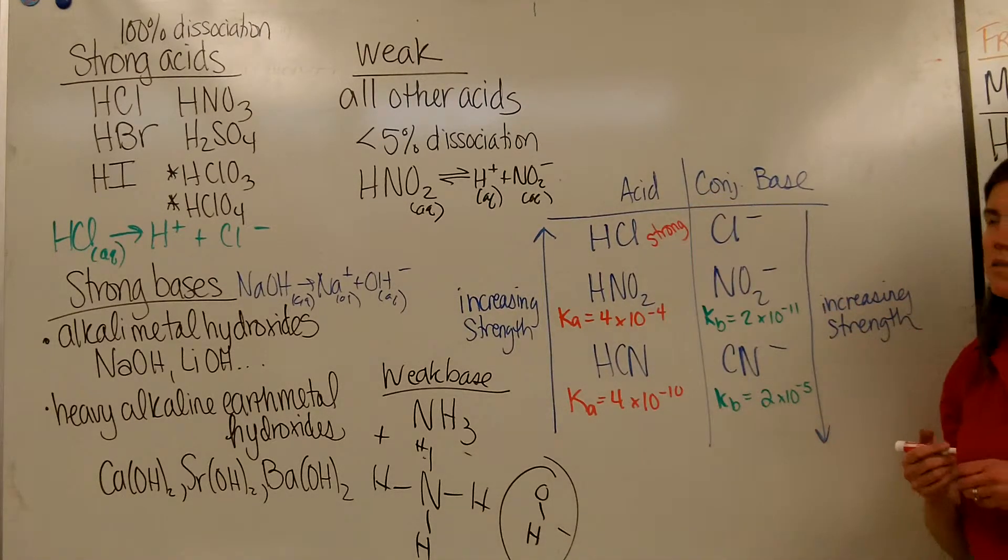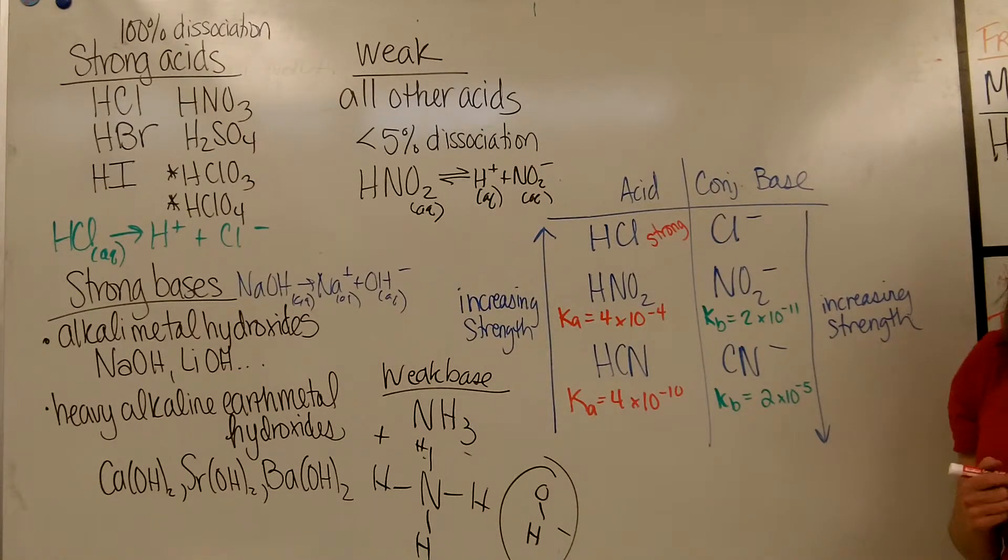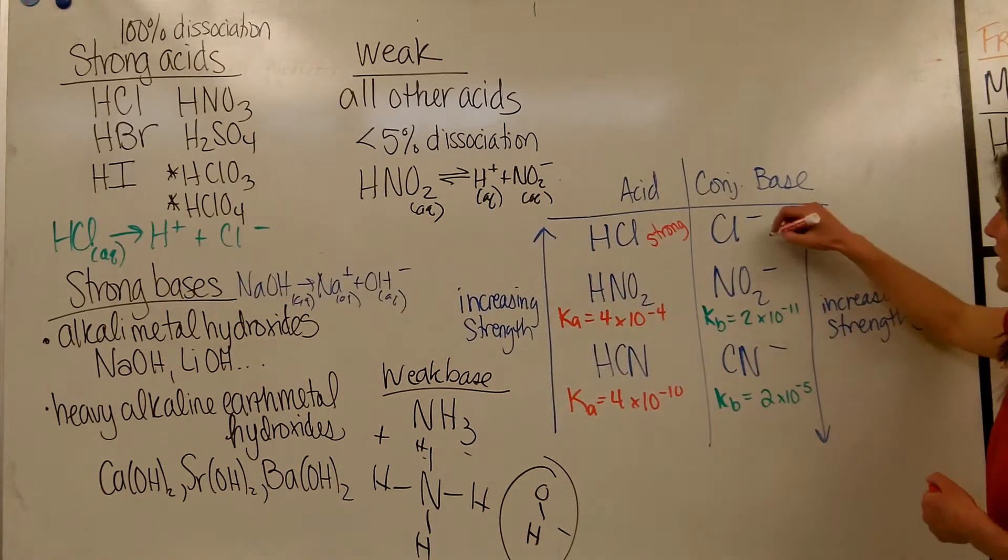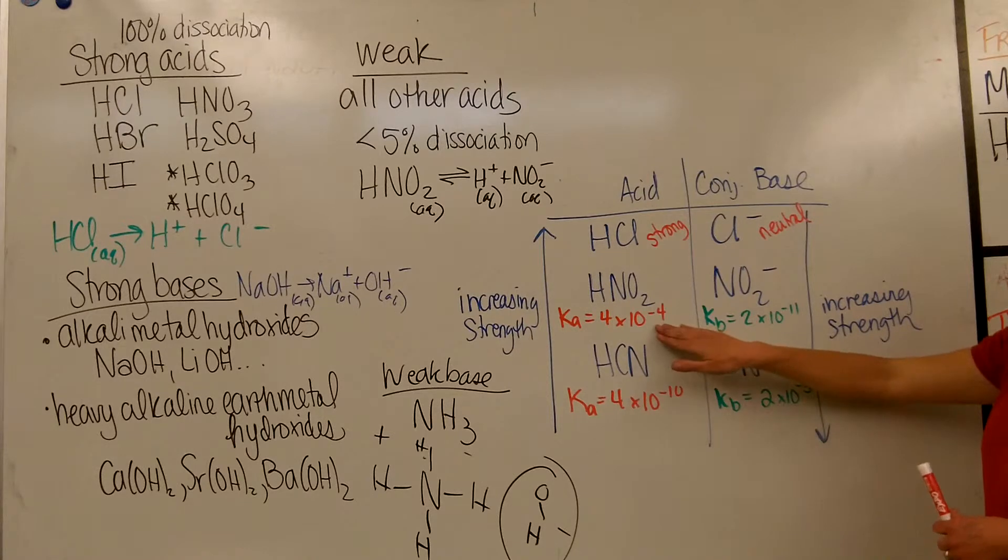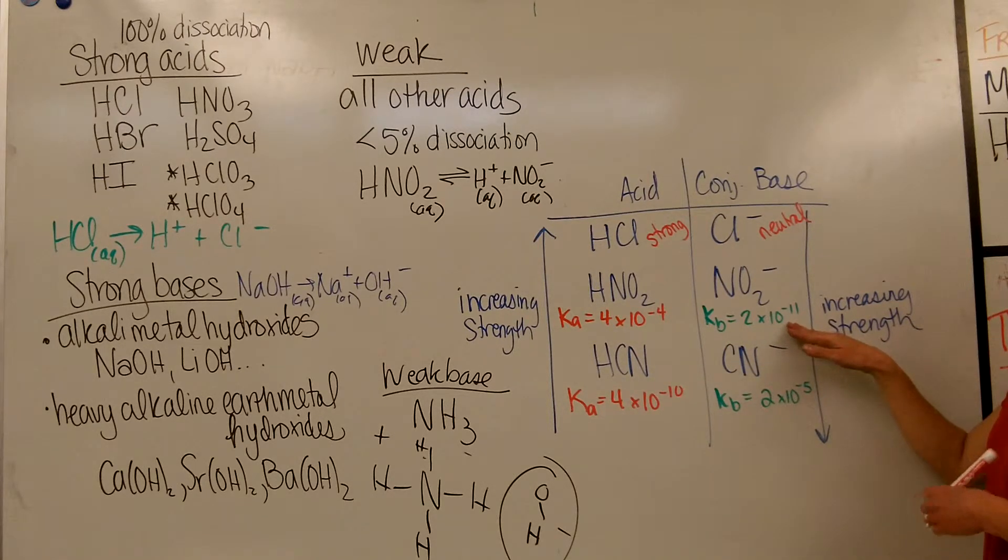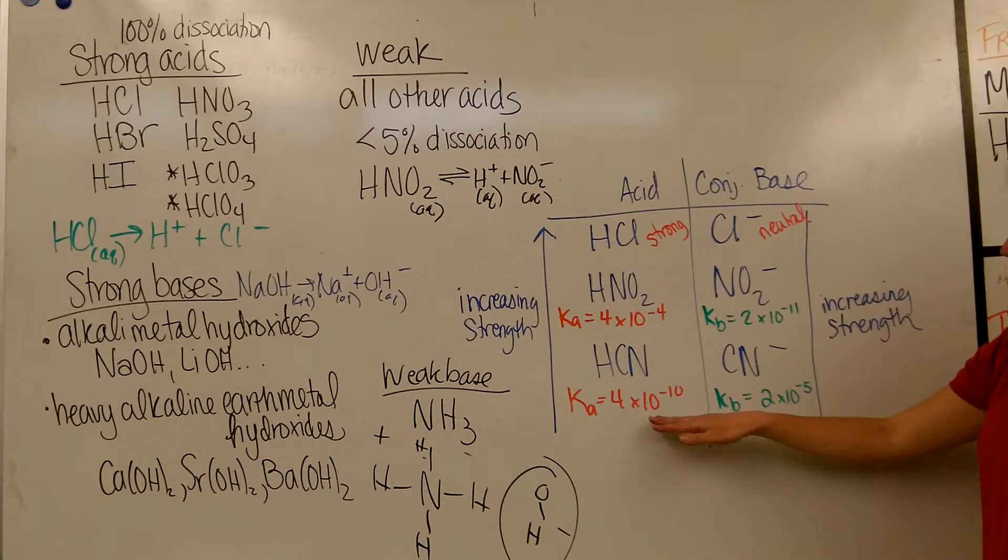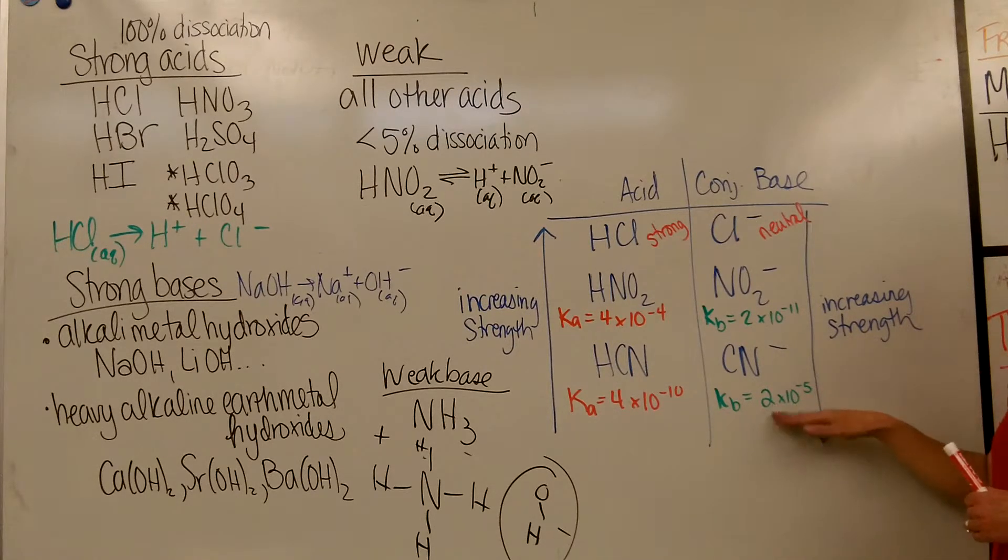For strong acids, so this is very strong, has a very large K-value, the conjugate base is so weak, we can essentially think of it as being neutral. So it's really not even a base at all, because it's so weak. When you have a weak acid, its conjugate base will be a weak base, and the weaker the acid, the better the conjugate base you will have.